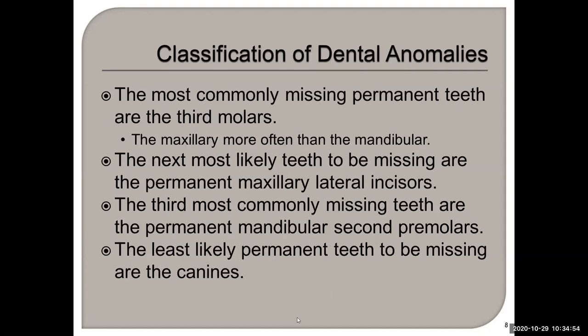The most commonly missing permanent teeth are the third molars — the wisdom teeth. The maxillary wisdom teeth are more often missing than the mandibular wisdom teeth. The next most likely teeth to be missing are the permanent maxillary lateral incisors, and the third most common are the mandibular second premolars. The least likely permanent teeth to be missing are the canines.